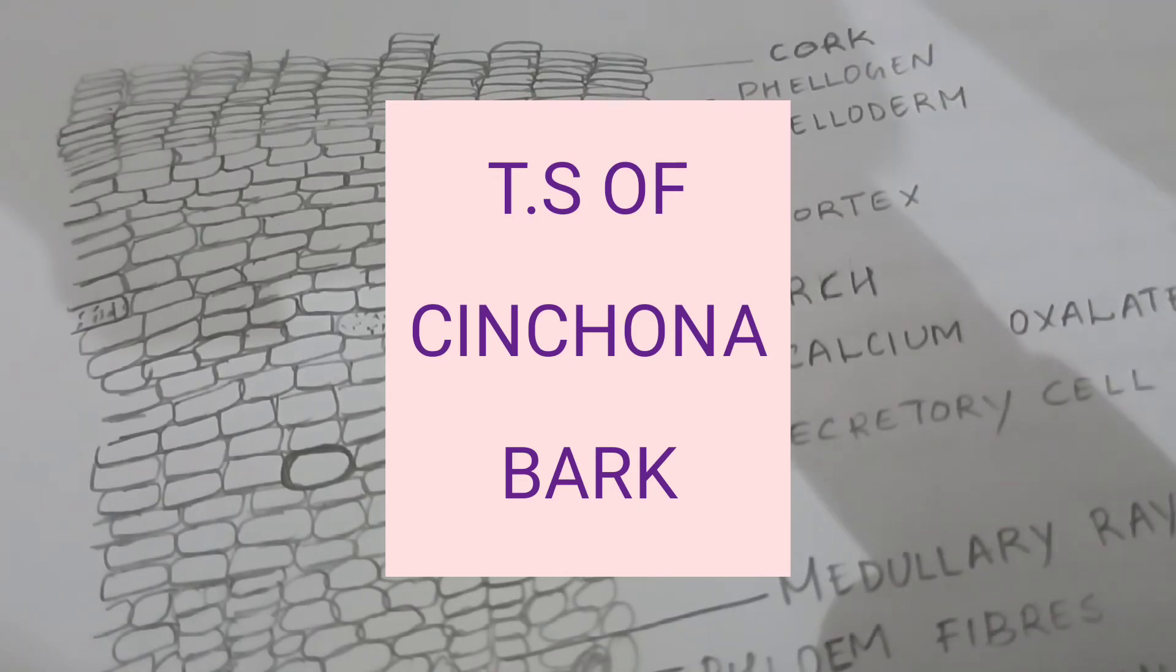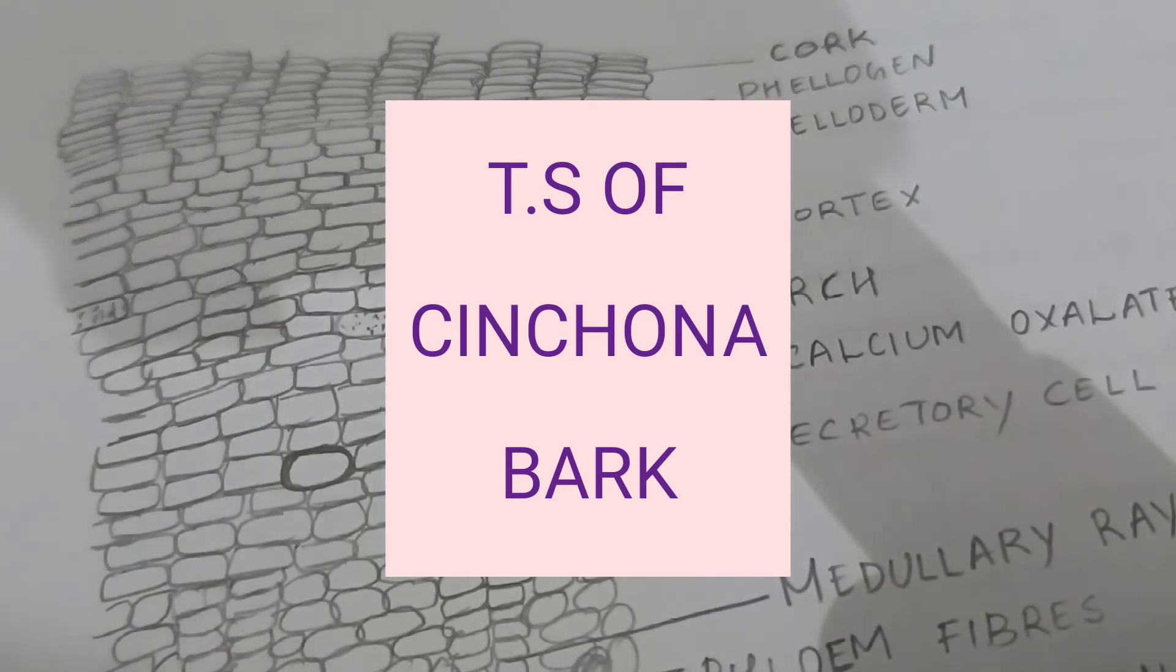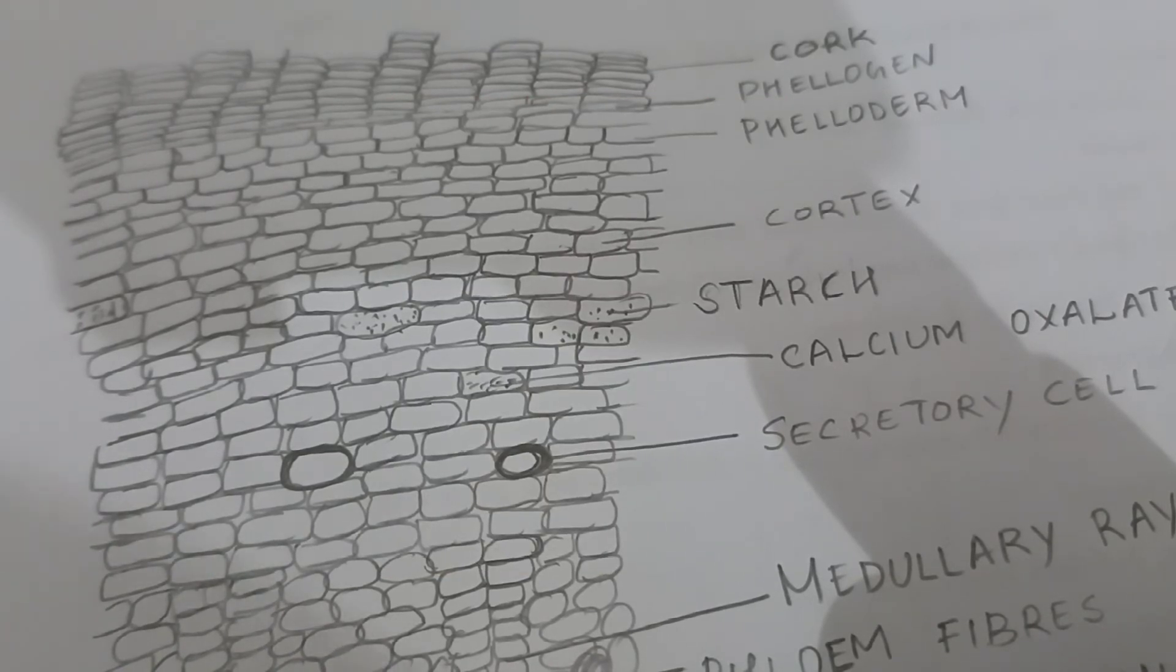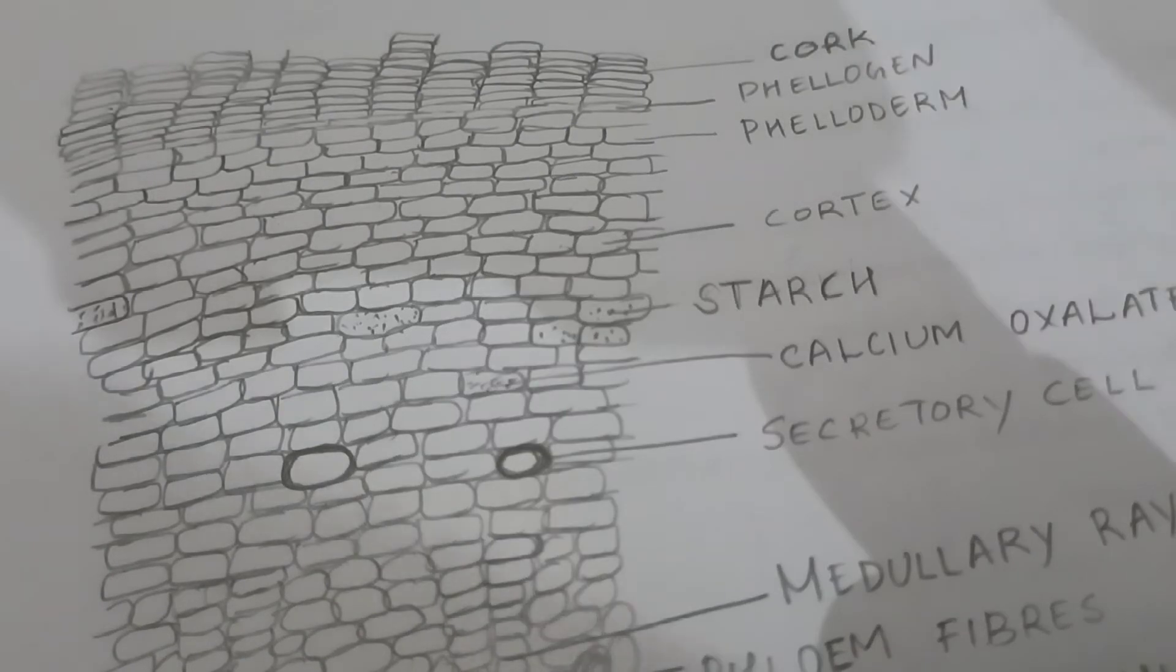In this video we are going to study the transverse section of cinchona bark. It shows a well-developed periderm, a wide cortex, and a large secondary phloem.